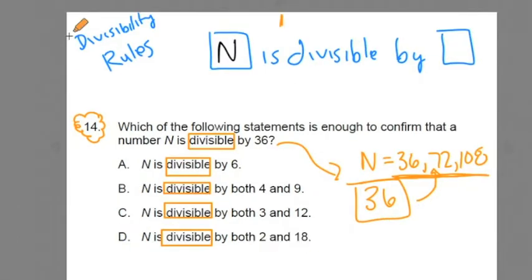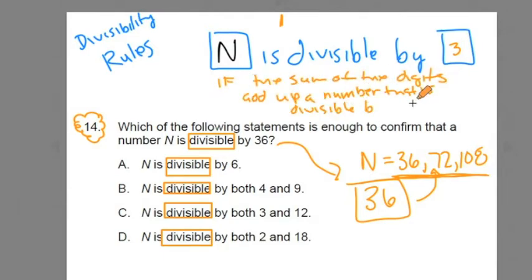Let's do divisibility of 3. A number is divisible by 3 if the sum of the digits add up to a number that's divisible by 3. Let me give you an example. 12. Is it divisible by 3? Well, the digits, 1 and 2, add up to 3, which can be divided by 3. So 12 is divisible by 3. Or 144. Is that divisible by 3? We take the digits in 144, we add them up, we get 9. Is 9 divisible by 3? Yes. So 144 is divisible by 3.